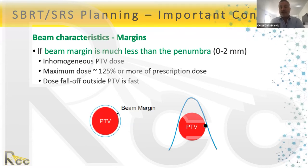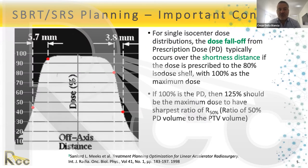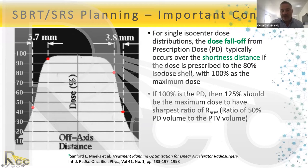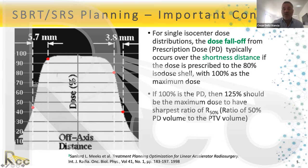If the beam margin is much less than the penumbra, the PTV dose will be inhomogeneous with a maximum dose of 125% or more. We prescribe to lower isodoses like 80% because the dose fall-off occurs over a shorter distance. For example, prescribing to 80% gives a 50% dose distance of 3.8 mm, versus 5.7 mm when prescribing to 95%, so we take advantage of the rapid dose fall-off.